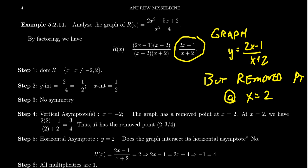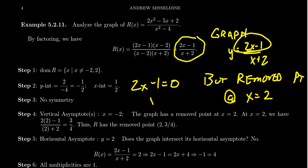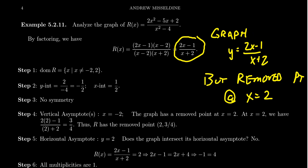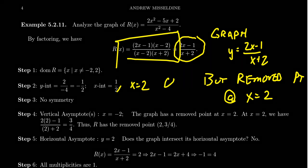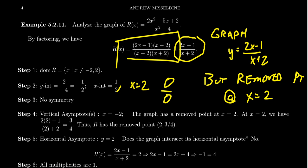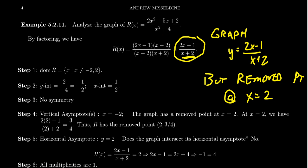To find the y-intercept, plug in x equals 0 into the simplified function: you get negative 1 over 2, which is our y-intercept. The x-intercept comes from setting the numerator 2x minus 1 equal to 0, giving x equals 1 half. Note that in the original fraction, x equals 2 might look like an x-intercept, but plugging it in gives 0 over 0 — that's actually the removed point, so it's better to use the reduced fraction.